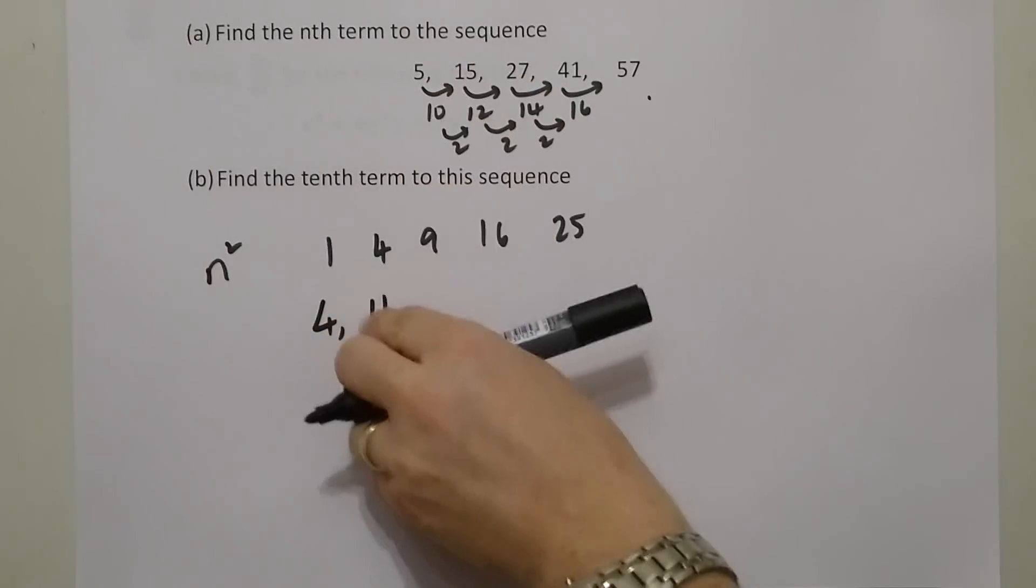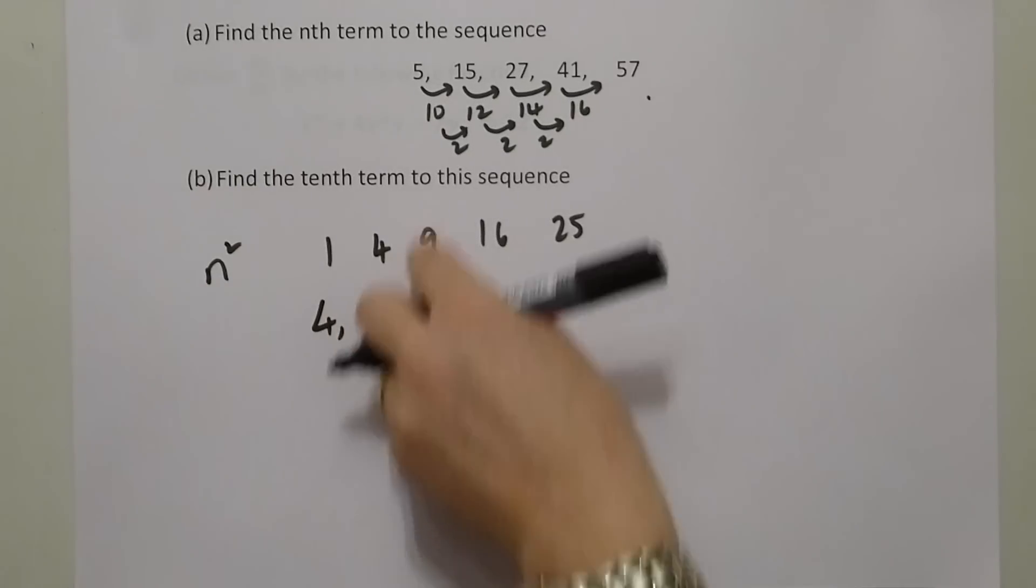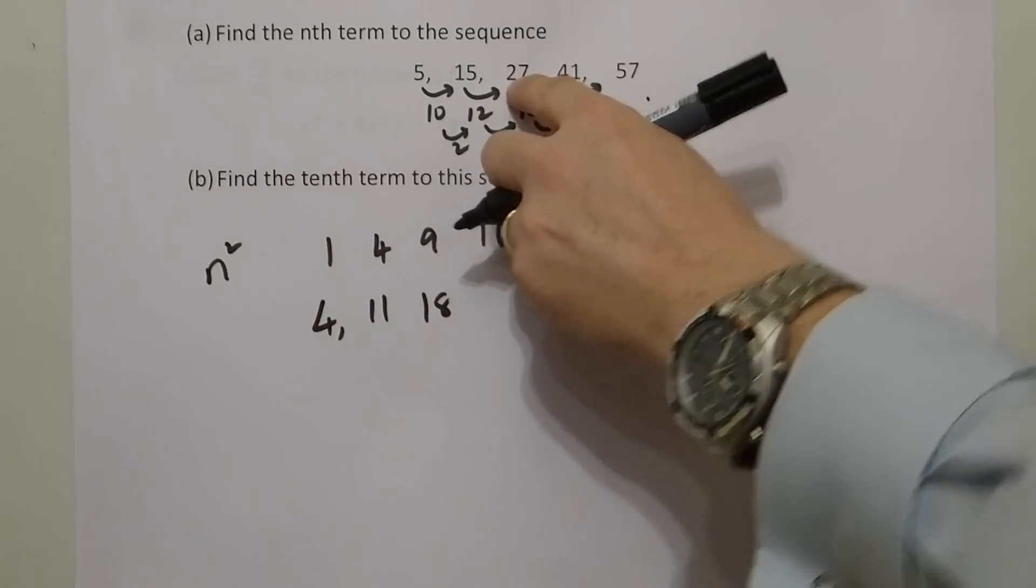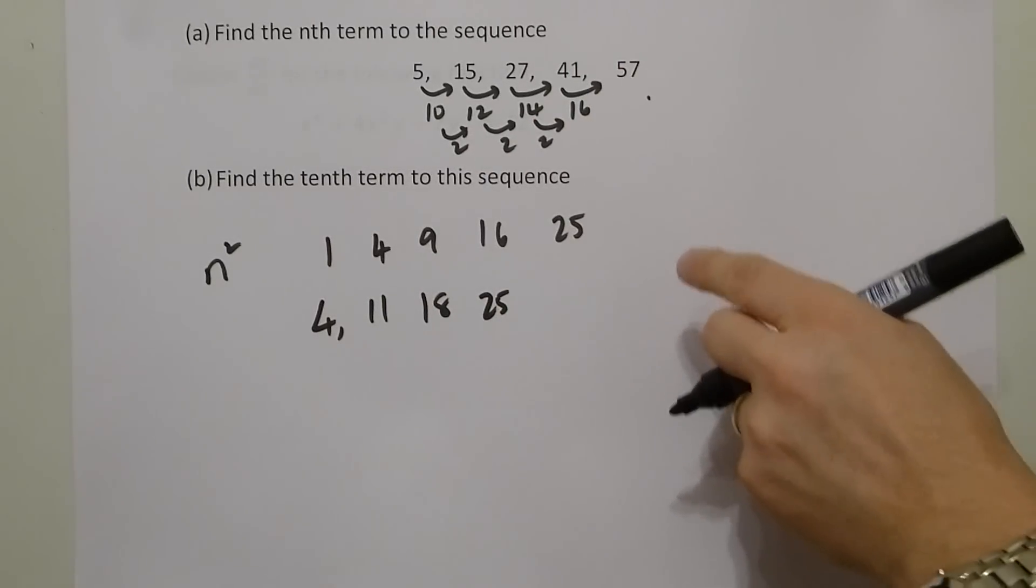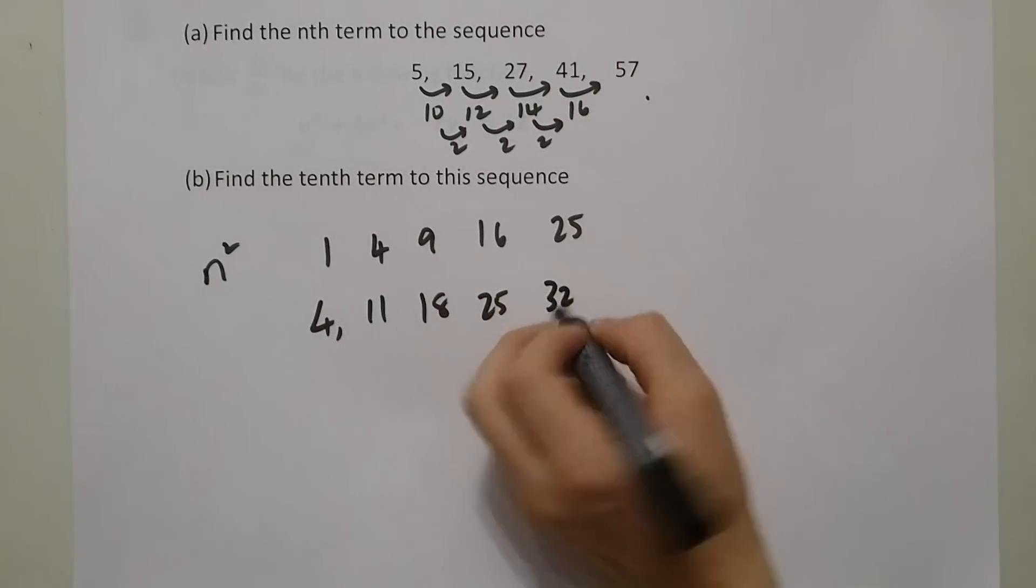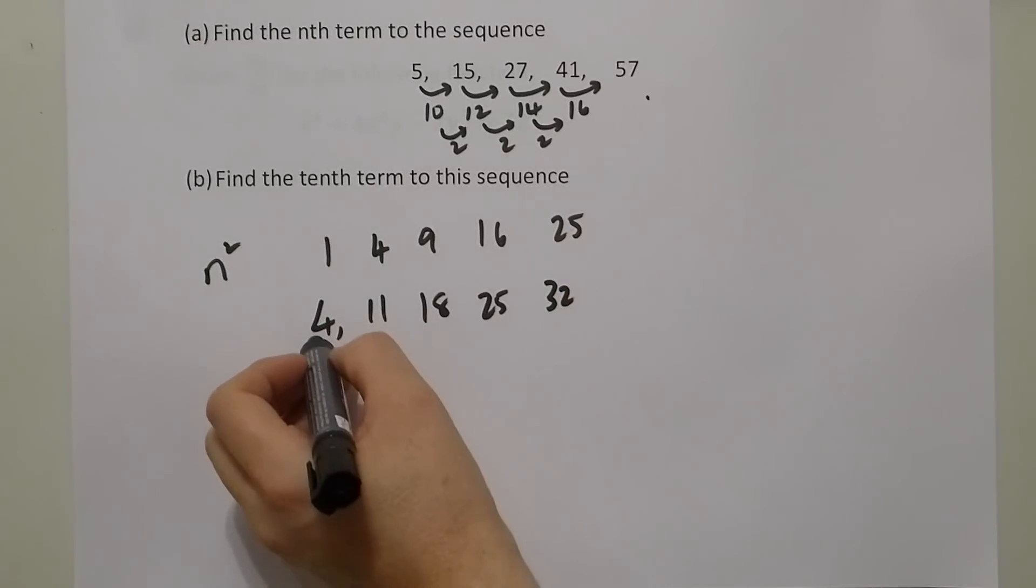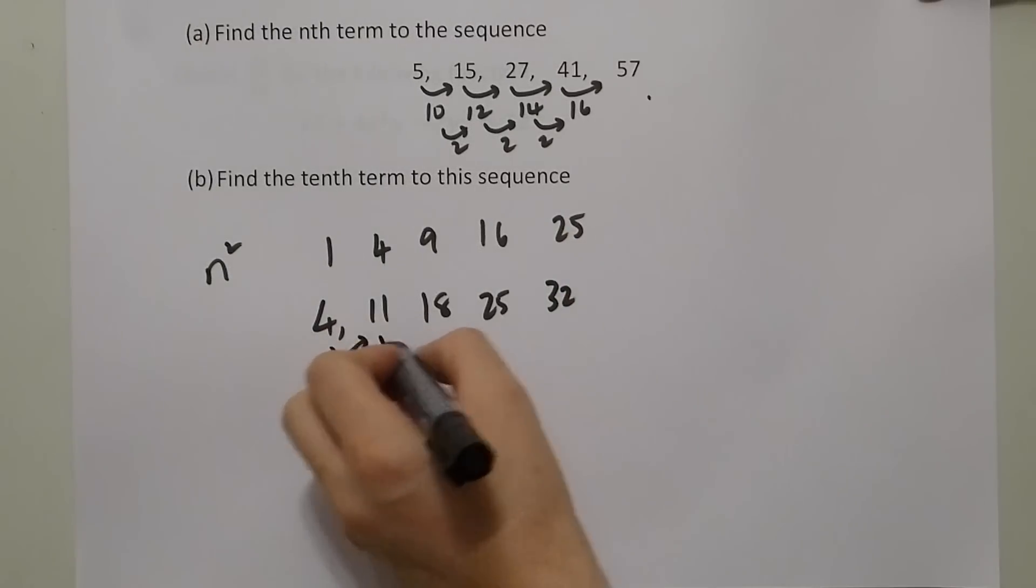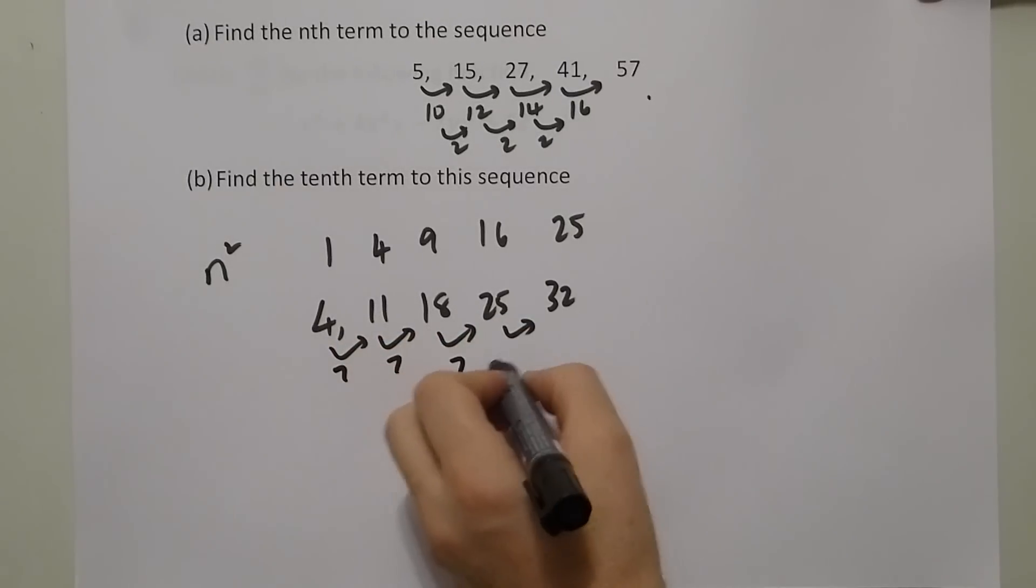11 to give 15, 18 to give 27, 25 which will give you the 41, and in this last case, 32 which will give us the 57. And this sequence, we can see, does go up by the same number each time. It goes up by 7 each time.